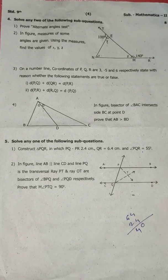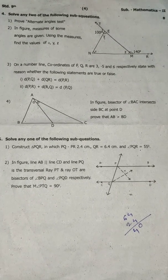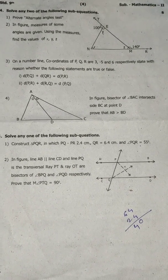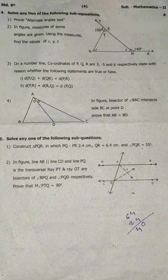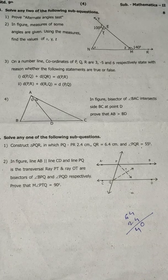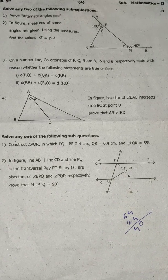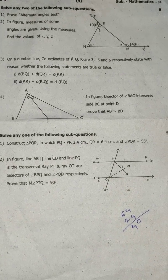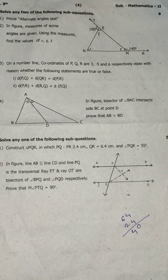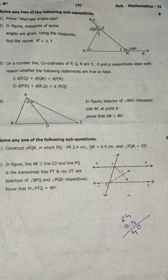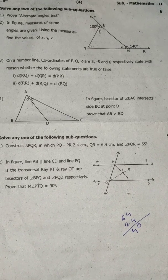Question 5: Solve any 1 of the following sub-questions. Construct angle PQR in which PQ minus PR equals 2.4 cm, QR is equal to 6.4 cm, and angle PQR is equal to 55 degrees.